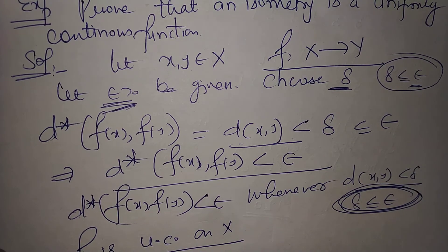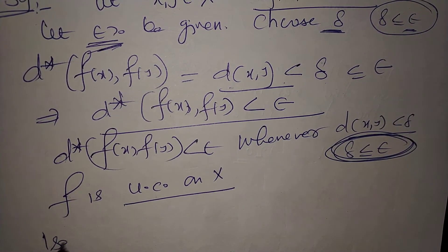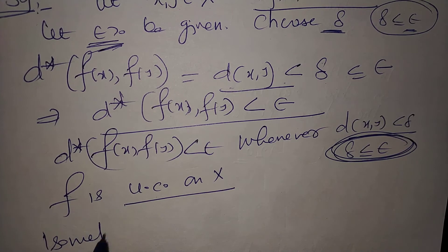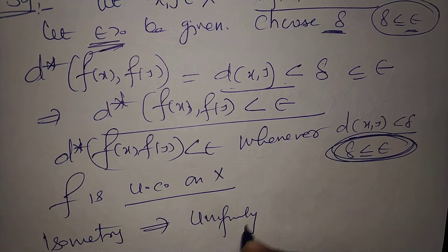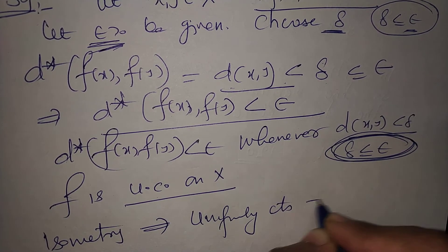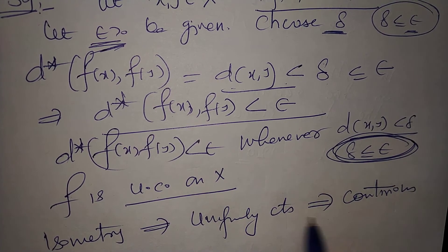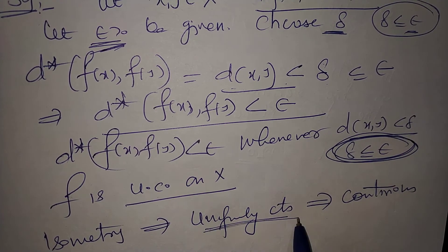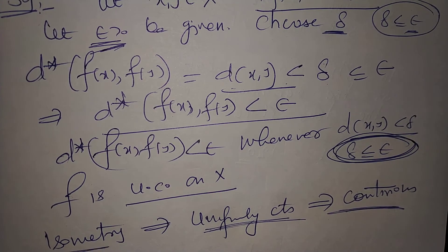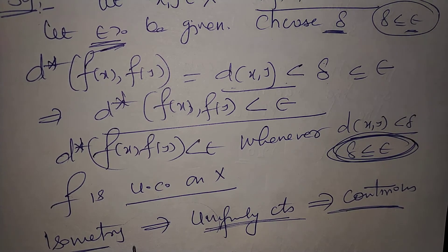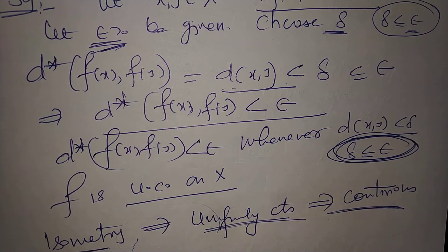This is a stronger condition. The relationship is: an isometry is always uniformly continuous, and a uniformly continuous map is always continuous. So isometry implies uniform continuity, which implies continuity — each condition is strictly stronger than the next. Next example.